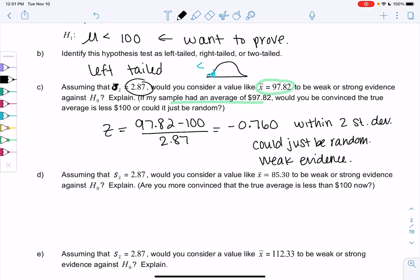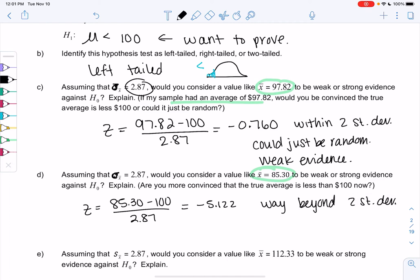Strong evidence needs to be way more convincing that it's less than 100. Same idea. Assuming that sigma of x-bar is 2.87, what if instead my sample has x-bar of 85.30? To me, that sounds stronger. $85 is significantly less than 100 compared to 97. Let's check the z-score to see if we're more convinced that the true average is less than 100. We'll do 85.30 minus 100, divide by 2.87, and find a z-score. I get negative 5.122. I'm definitely more convinced. It's way beyond two standard deviations. So this is strong evidence. This is way different than 100.